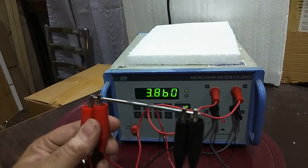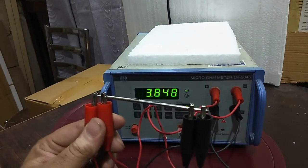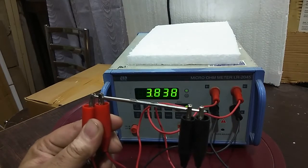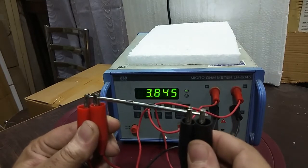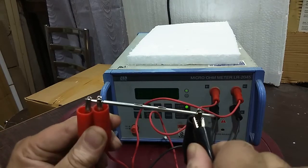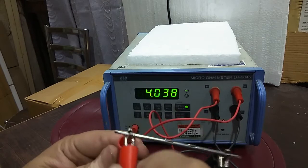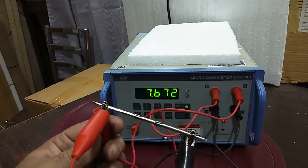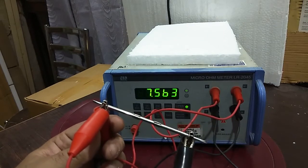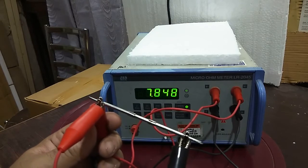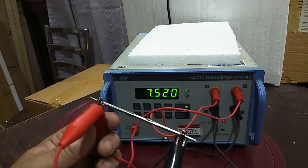Let me show you what I was telling you previously, what will happen when I short these both points. Let's see. When I short these points, see, result was 3.8 milliohm, now it's gone up to 7.8, 7.5 milliohm.